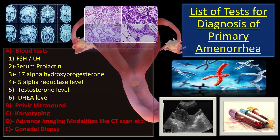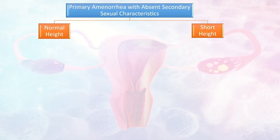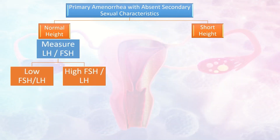If a patient presents with primary amenorrhea and absent secondary sexual characteristics, we have two groups: normal height and short height. In the normal height group, we check FSH and LH levels, which may be low or high.